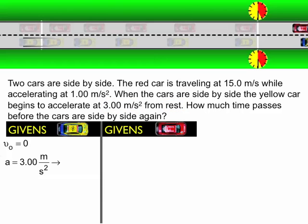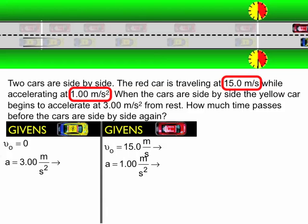The red car is moving at 15 meters per second when they're side-by-side on the white line on the left, so that's the initial velocity. And the red car is speeding up at 1 meter per second squared, so that's an acceleration for the red car.